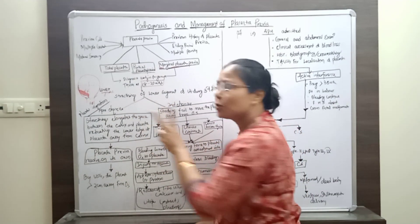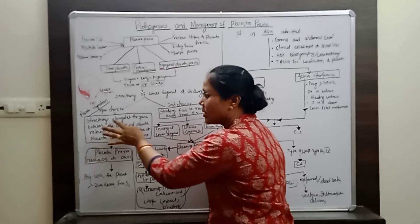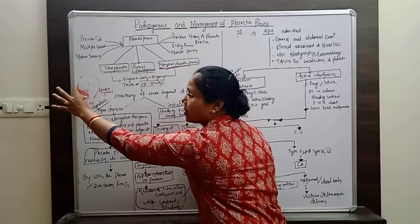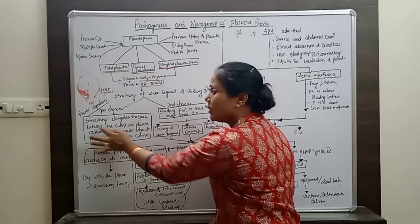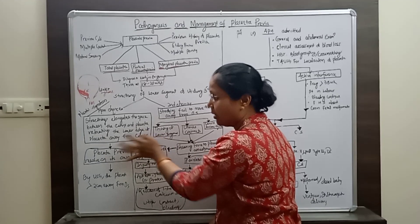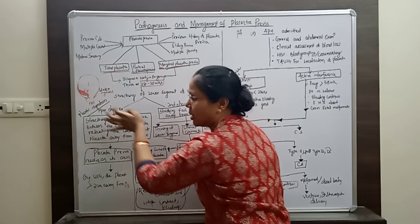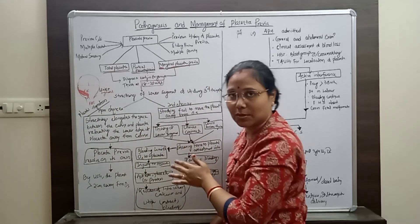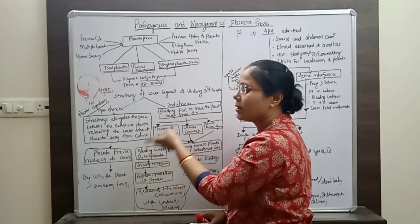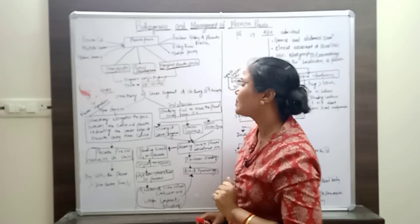The stretching elongates the space between the cervix and the placenta, relocating the lower edge of the placenta away from the cervix, so the placenta is now far from the internal os. This is placental migration, and it resolves by itself. It is mainly seen in type 1 and type 2 anterior placenta previa.